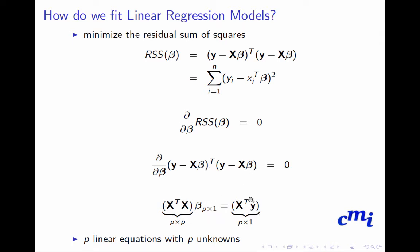This gives you the normal equation. X transpose X is a p cross p matrix, beta is p cross 1, and x transpose y is a p cross 1 vector. So we have p linear equations with p unknowns.